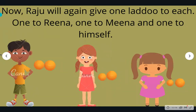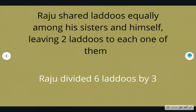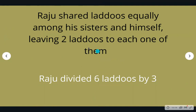After being left with three more laddus, Raju again gives one laddu each to Reena, Meena and himself. Ab woh ek ek laddu aur dega apne aap ko, Reena ko aur Meena ko. This leaves two laddus each. Raju shared the laddus equally — pehle usne ek ek laddu sab ko baata, phir jo bache unhe bhi ek ek sab ko baata, iske baad sab ke paas do do laddu bache.